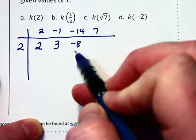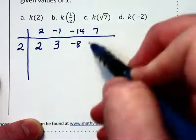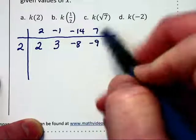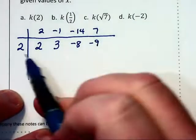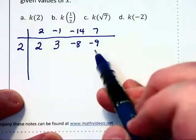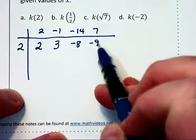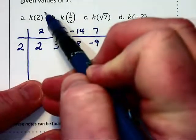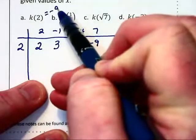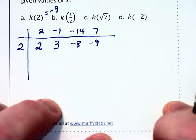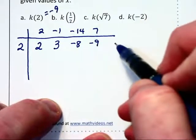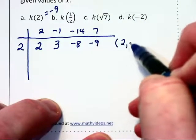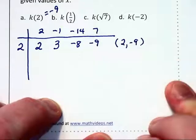2 times that negative 8 is negative 16. Plus that 7 makes negative 9. Now that tells us when 2 is input into the function, negative 9 is the output. In other words, k of 2 is equal to negative 9. It also tells us if we were to be graphing that the point 2, negative 9 would be on the graph of k of x.